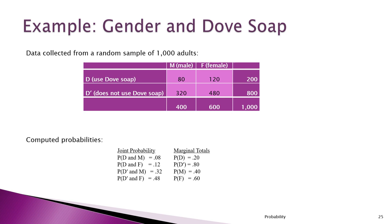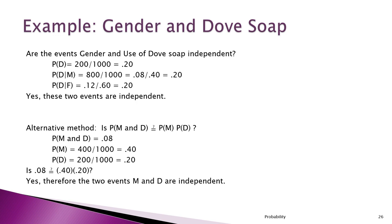The marketer wants to know whether gender and Dove soap use are independent. P(D) is 20%. P(D|M) is 0.08 over 0.40, which is also 20%. P(D|F) is 0.12 over 0.60, which is also 20%. They're independent — knowing the gender of the person doesn't affect their use of Dove. We can also verify: P(M and D) is 0.08, and P(M) times P(D) is 0.40 times 0.20, which also equals 0.08. So M and D are independent of each other.